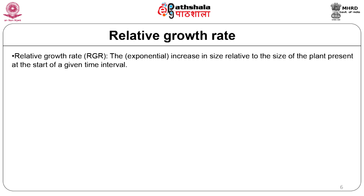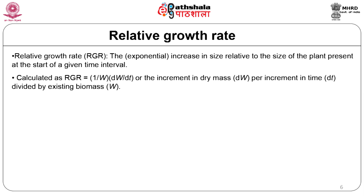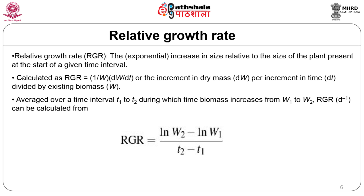RGR represents an increment in dry mass (dW) per increment in time (dt), divided by existing biomass W, averaged over a time interval during which biomass increases from W1 to W2. RGR can be calculated as the difference in log of the weights at the two time intervals divided by the time interval.